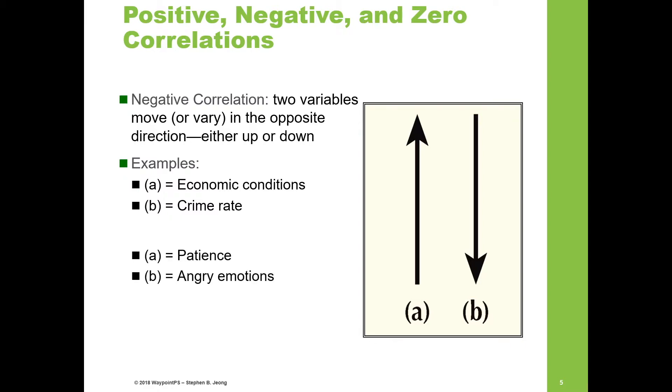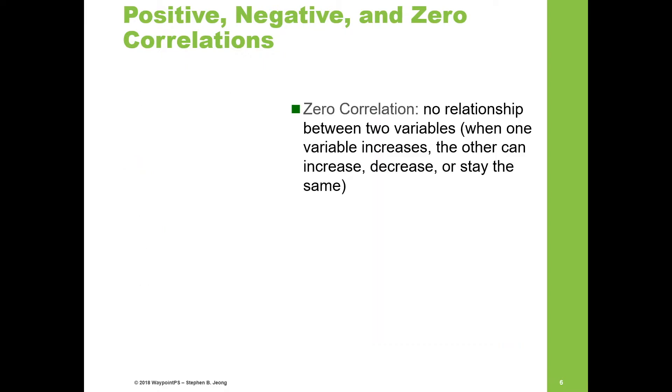Another example: a person's patience. If a person has more patience, meaning patience increases or is higher, we can expect that person to experience fewer angry emotions. So as variable A increases—the level of patience increases—we would expect the angry emotions to decrease. This is an example of a negative correlation.